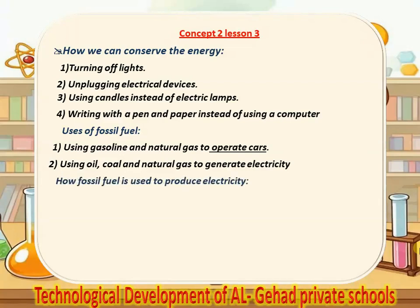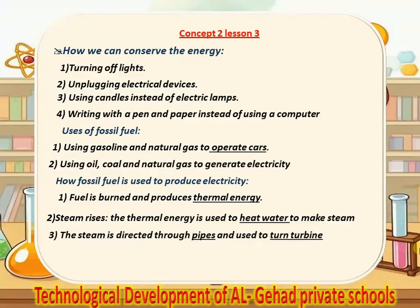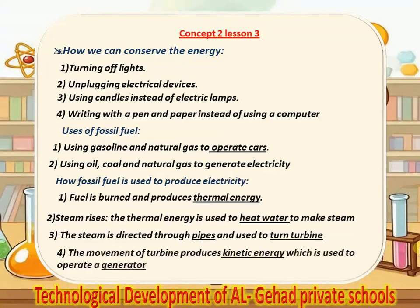How fossil fuel is used to produce electricity? Number 1, fuel is burned and produces thermal energy. Number 2, steam rises — the thermal energy is used to heat water to make steam. Number 3, steam is directed through pipes and used to turn a turbine. Number 4, the movement of the turbine produces kinetic energy which is used to operate a generator.